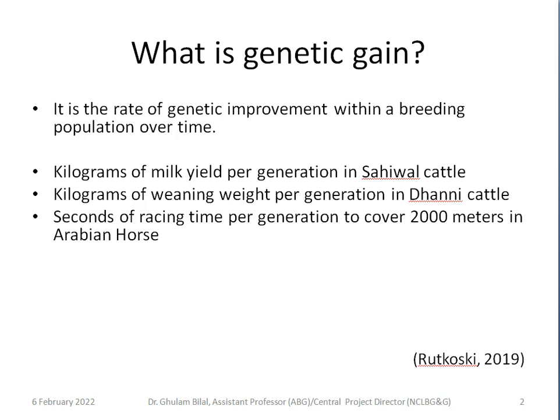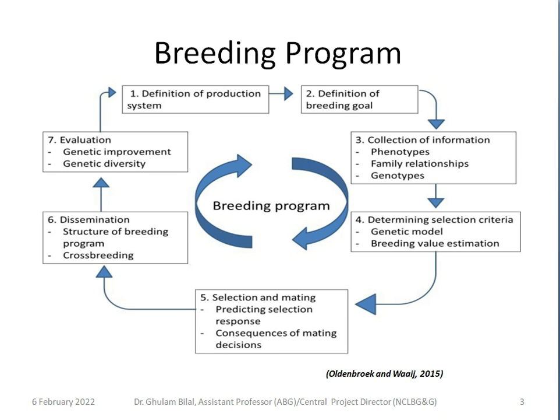This is a typical breeding program which starts from defining the production system and breeding goals, collecting phenotypes, genotypes, and pedigrees, determining selection criteria and breeding value estimation, and then at stage five comes selection and mating and predicting selection response. Genetic gain basically tells us how much we have achieved through a selection program or through breeding and mating decisions.